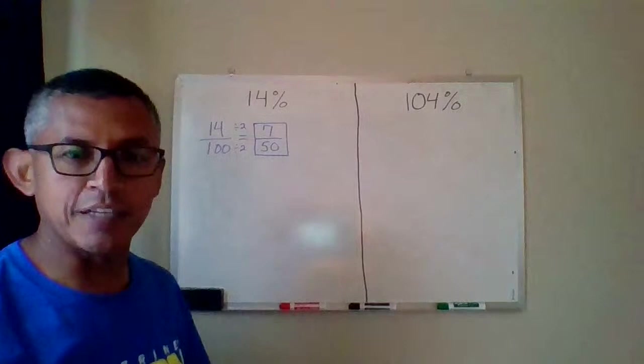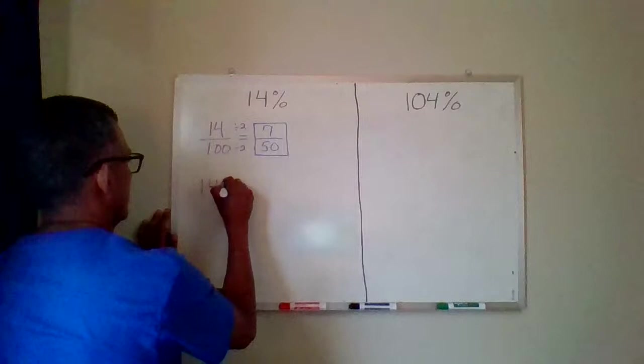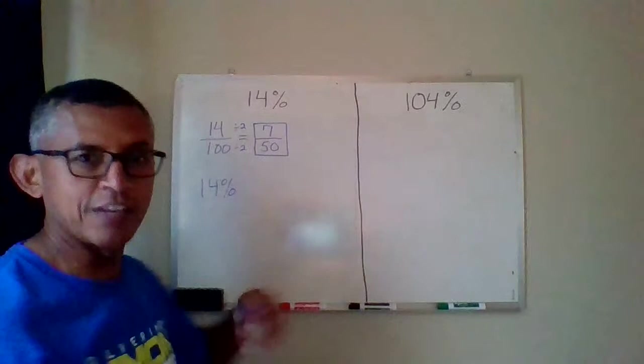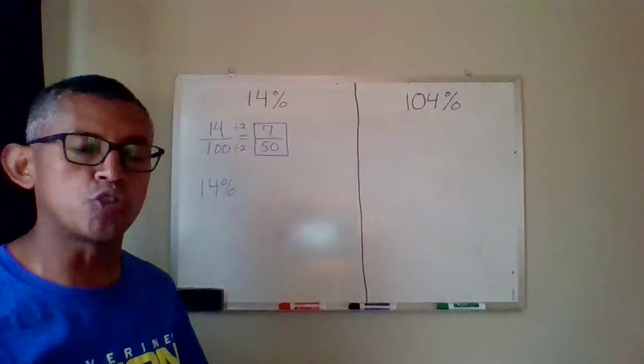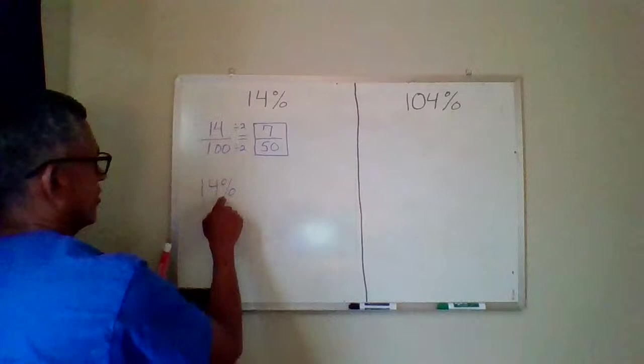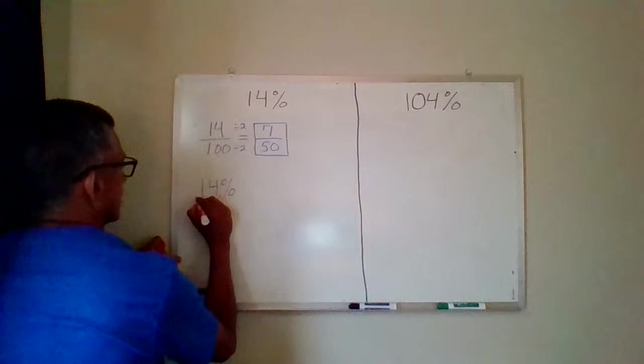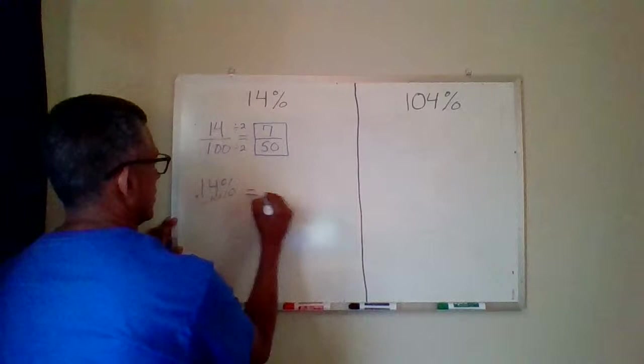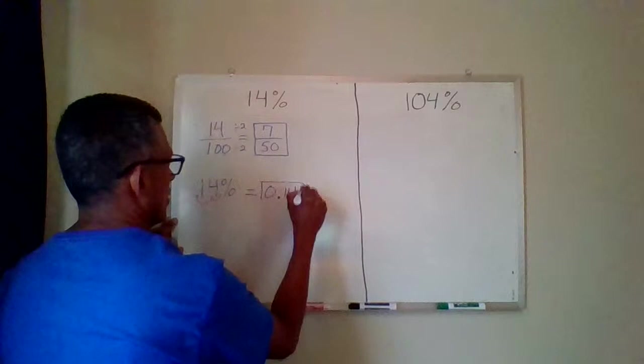Now, if I want to change that percent into a decimal, again, if you remember from the previous slide, it says take the 14 and divide it by 100, and that's the same thing as moving the decimal two places to the left. So I can take my imaginary decimal, which goes right after the number, move it two places to the left, and that's the new spot for my decimal. So 14% is equivalent to 0 and 14 hundredths as a decimal.